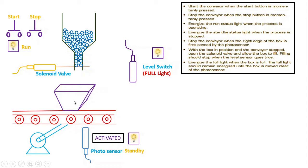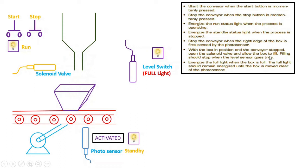With the box in position and the conveyor stopped, open the solenoid valve. Allow the box to fill, and once the filling is done, filling should stop when the level sensor goes high. Once the entire filling takes place, there will be a limit for the box to take quantities into it. Once it stops, the level sensor should turn on, and a light is provided for it.